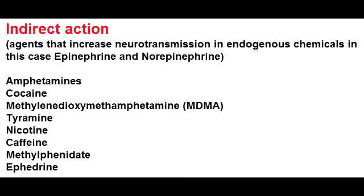Indirect Sympathomimetics. How do Indirect Sympathomimetics work? They either release stored catecholamines or they prevent the reuptake of catecholamines. The three Indirect Sympathomimetics include amphetamines, ephedrine, and cocaine.